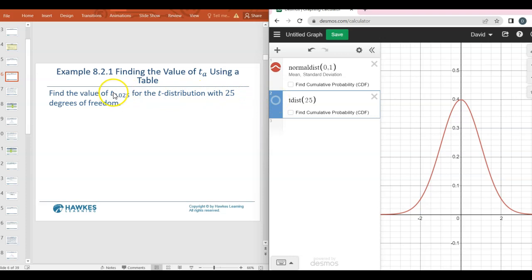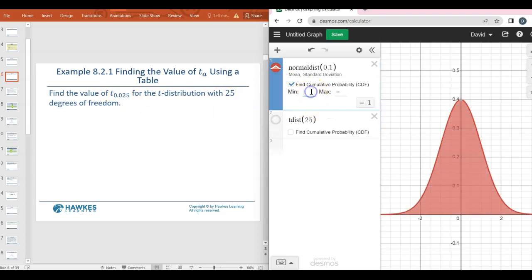Remember, when I was doing this before, when I found a critical number, I didn't use the normal dist command. I could have, but it would involve guessing and checking. I would have to pick this lower number, and I'm trying to find something that makes the area in the right tail be equal to this 0.025 here. You can see I'm not big enough.